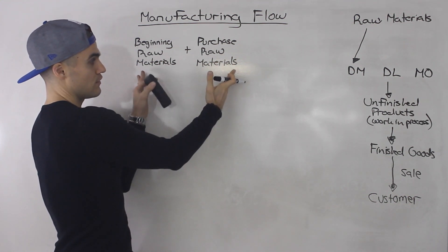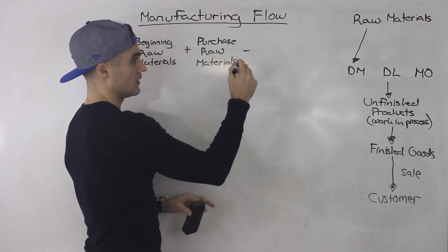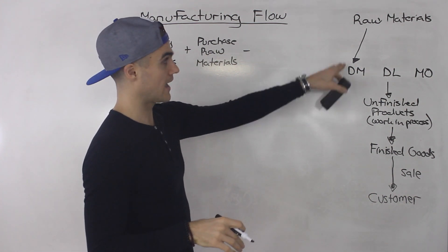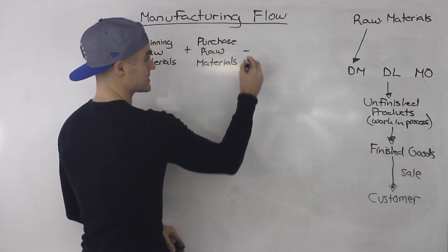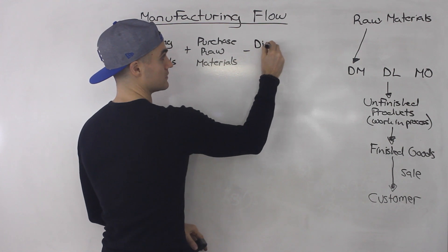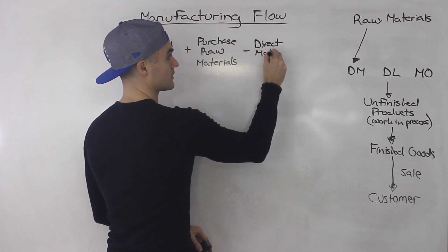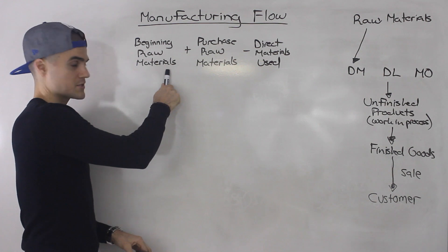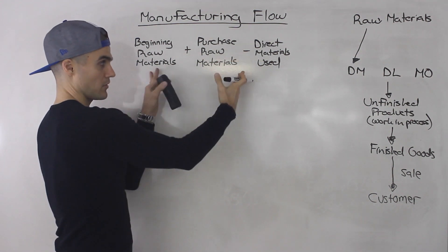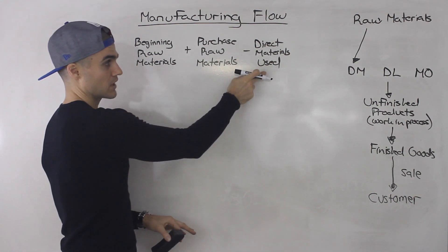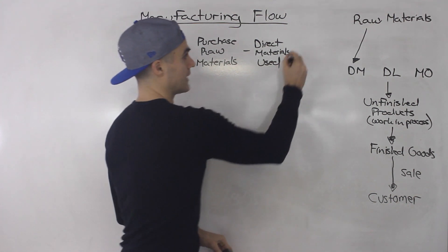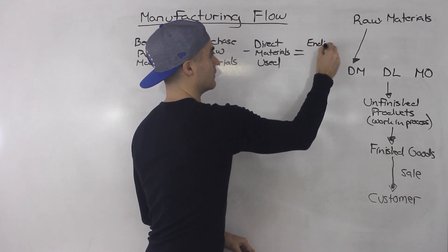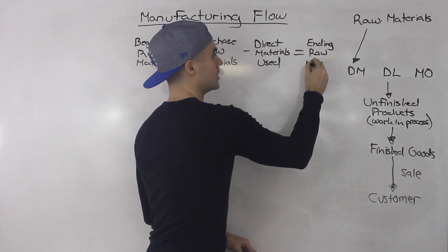Out of that whole stack of raw materials you have, you're going to put some into production. Raw materials that go into production are called direct materials used. So you start off with beginning raw materials, you purchase some more, some of those raw materials go into production as direct materials used, and after that you end up with ending raw materials.